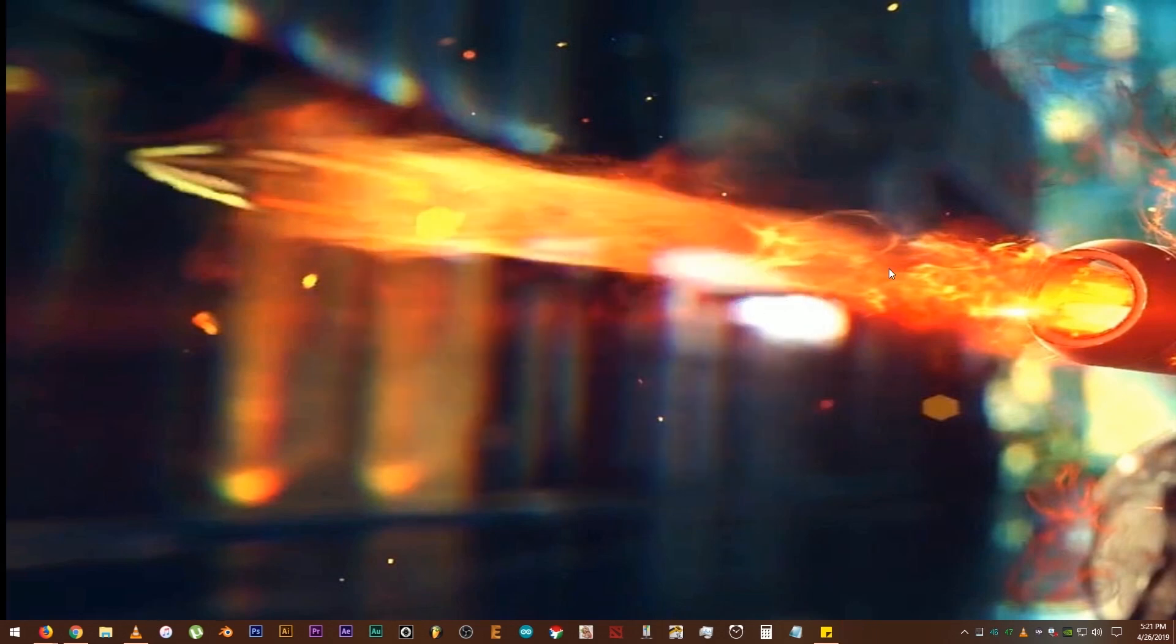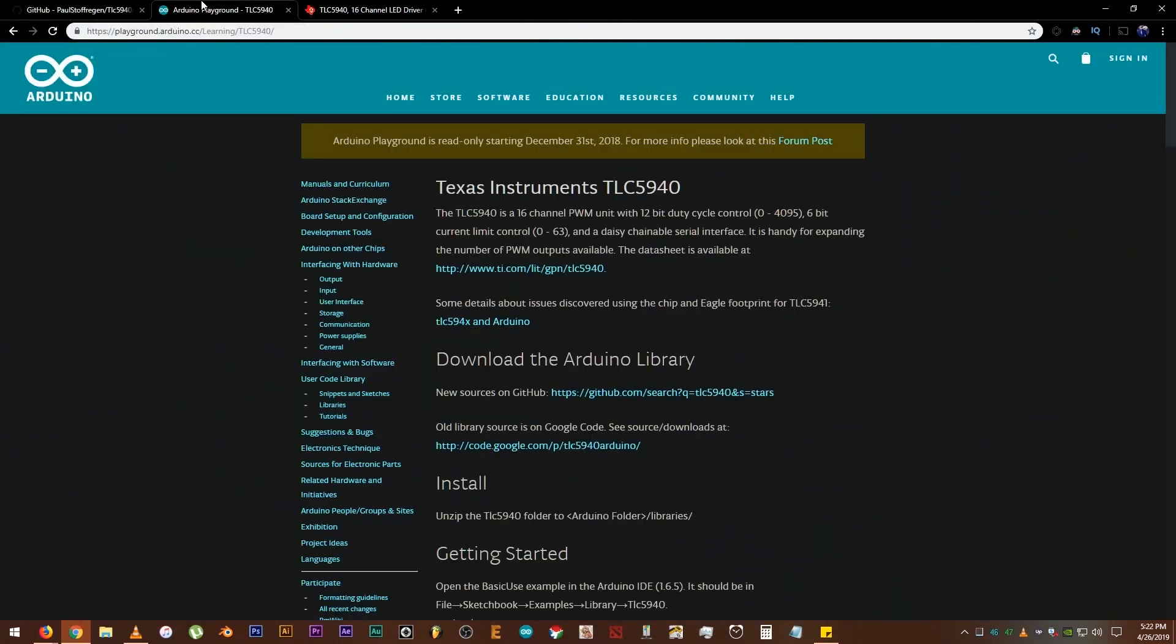We can either download the library using the Arduino IDE, GitHub, or from Arduino Playground. There it is. This has the complete information from the datasheet, libraries available, installation, hardware setup, and a lot more. You can probably just read it from the website.